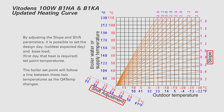By adjusting the slope and shift parameters, it is possible to set the design day and the base load set point temperatures. The boiler set point will follow a line between these two temperatures as the outdoor air temperature changes.